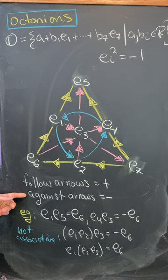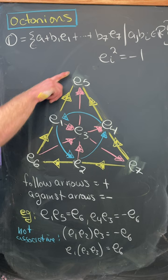So, for example, E1 times E3 will be E7. And also, E1 times E5 is E6. That's because all of these things are loops.